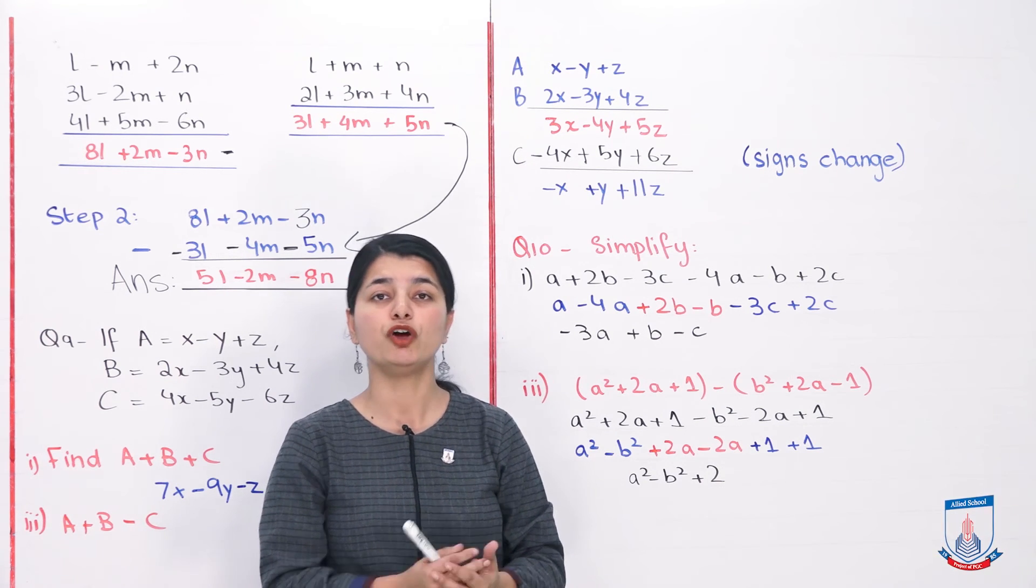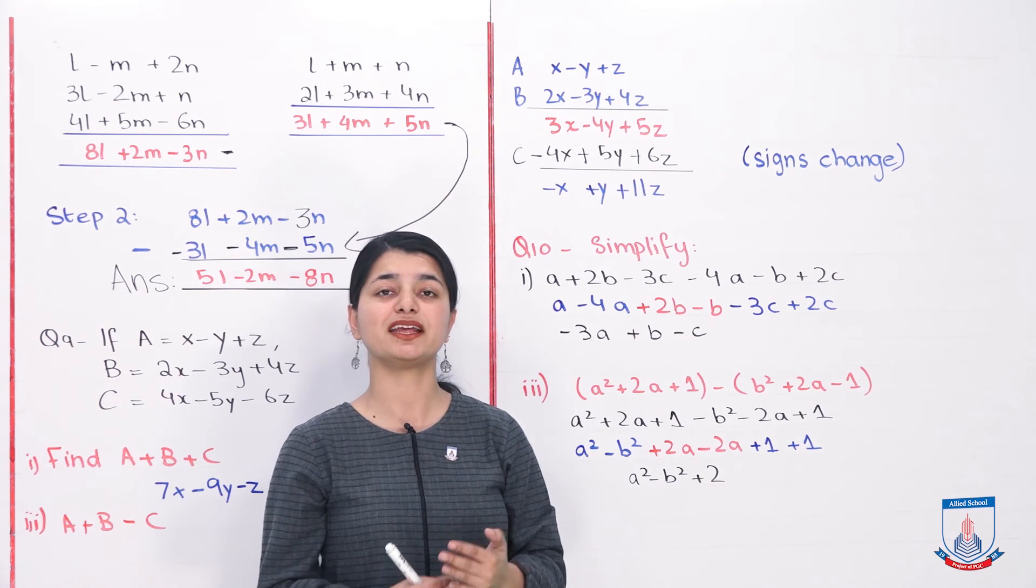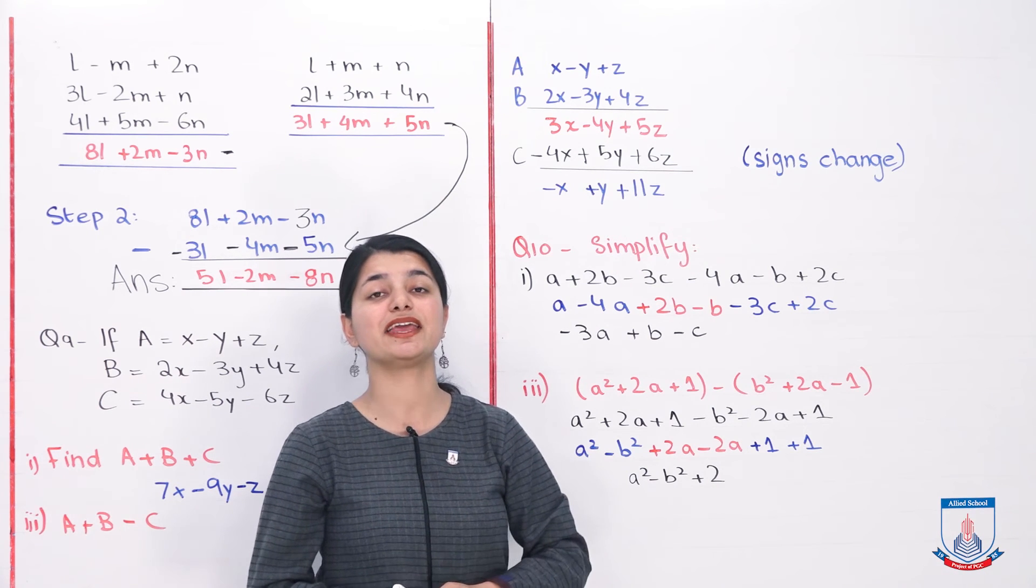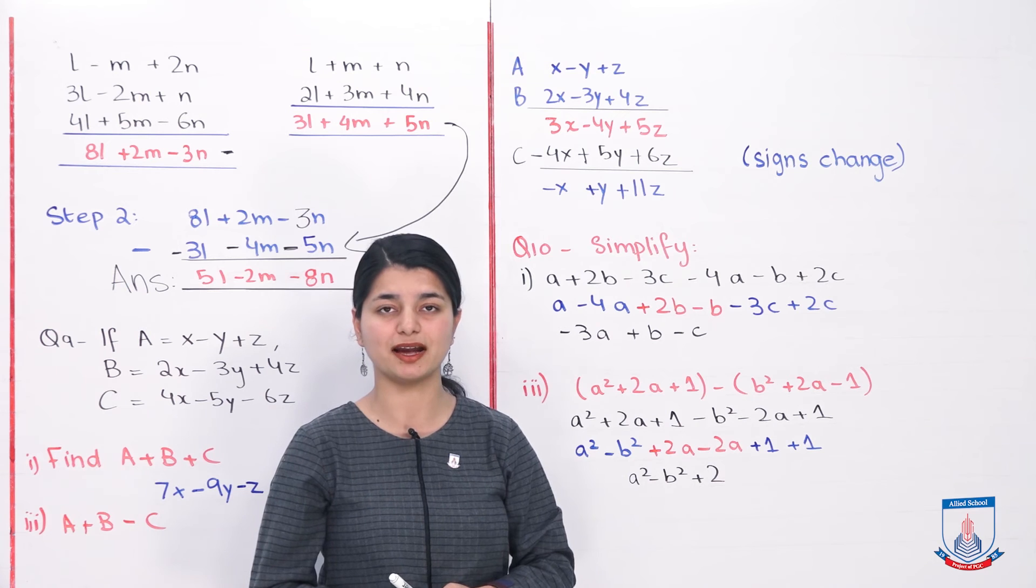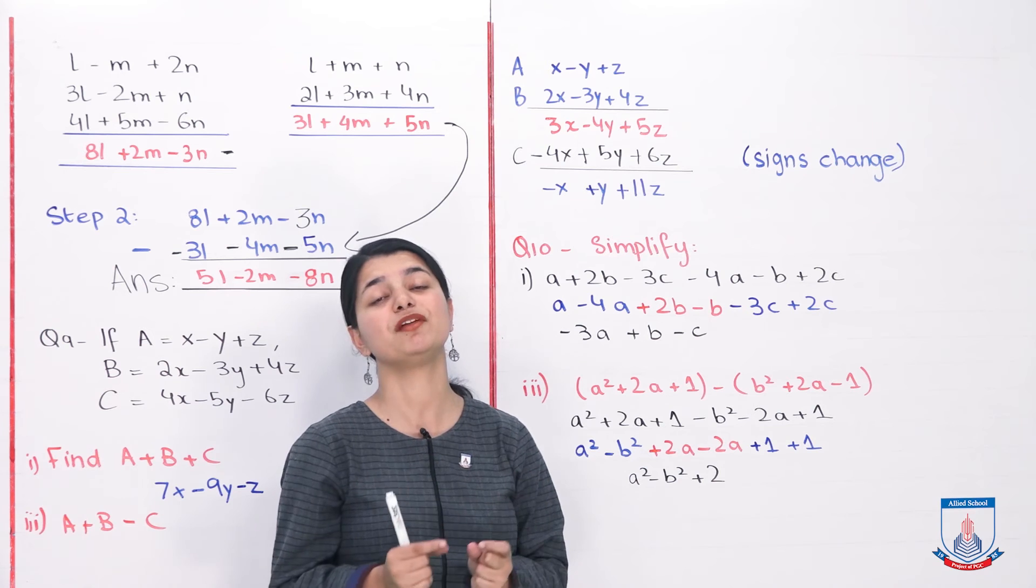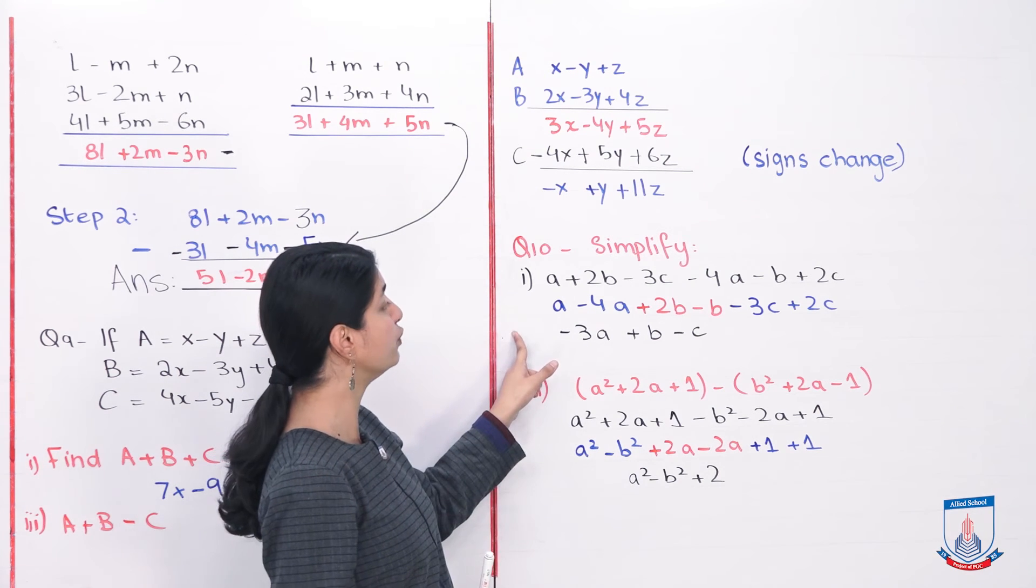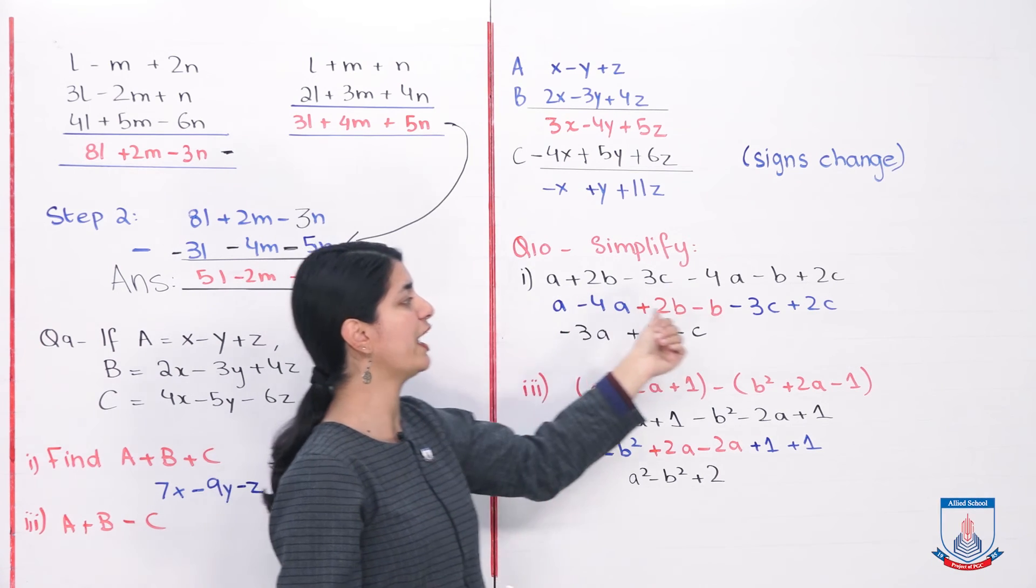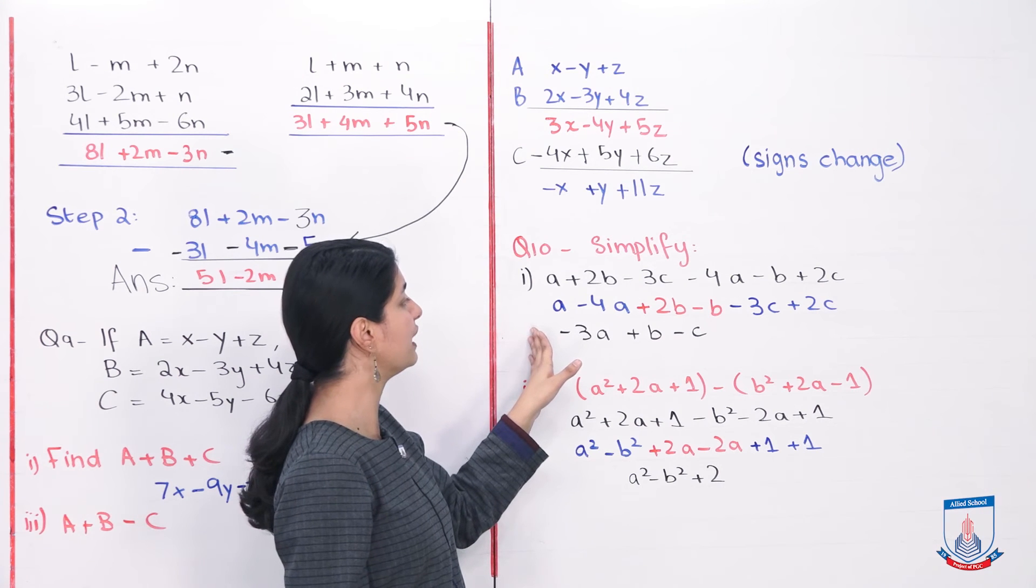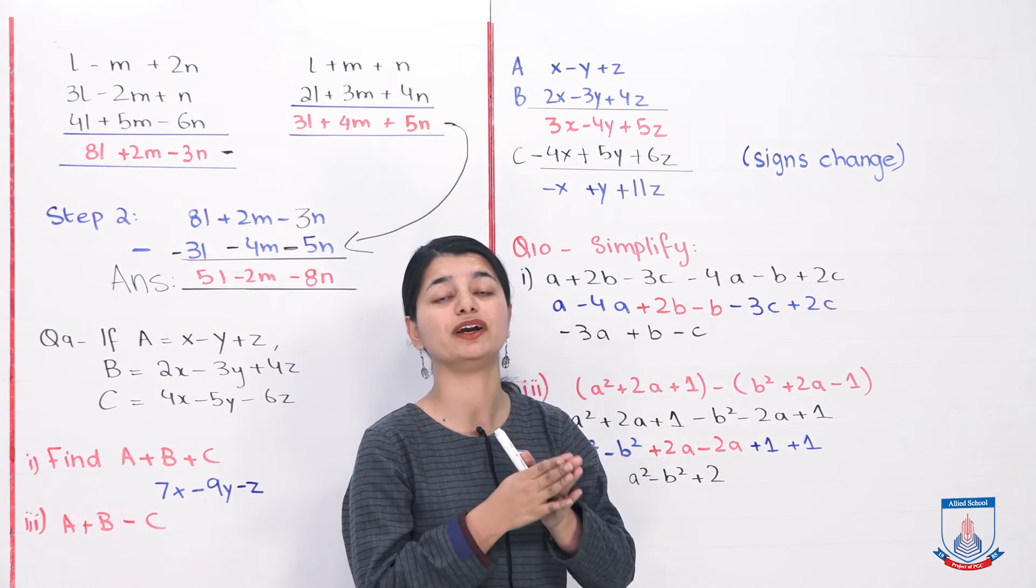The last question is question number 10. In this you have to do simplification. About simplification we will talk in a better way in the next lecture and in Exercise 8C. Right now we are just taking an idea of what basically happens in simplification. In simplification you gather like terms together and solve the question. You simplify it and write it in the simplest way. Like if we look at part 1, you were given a long expression in which there were many different terms. What we have to do is first we have to gather those terms together that can coordinate with each other.